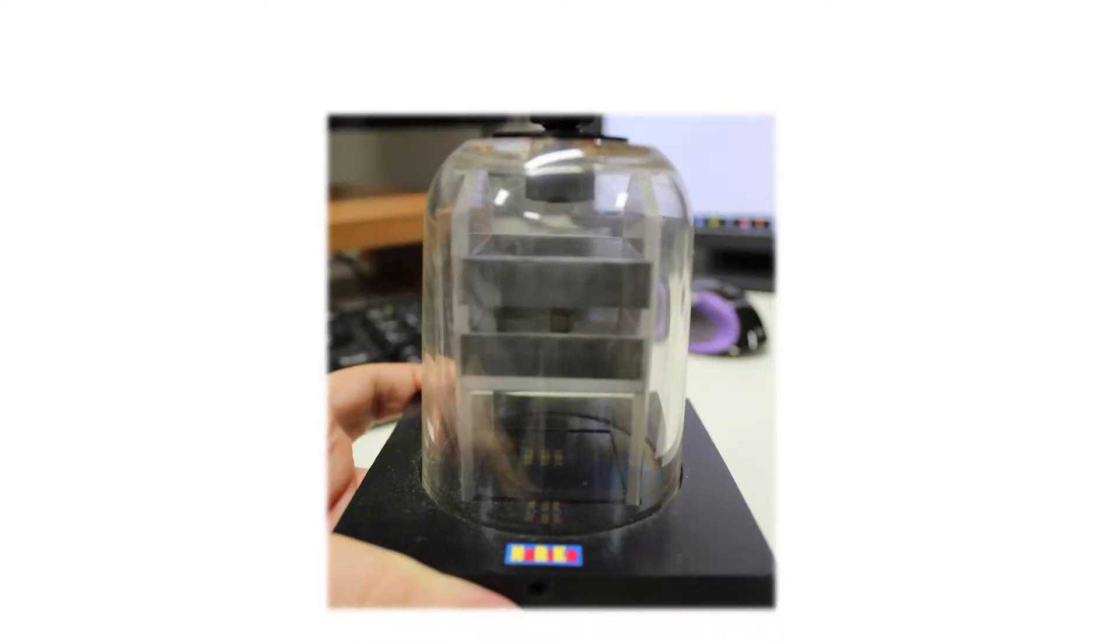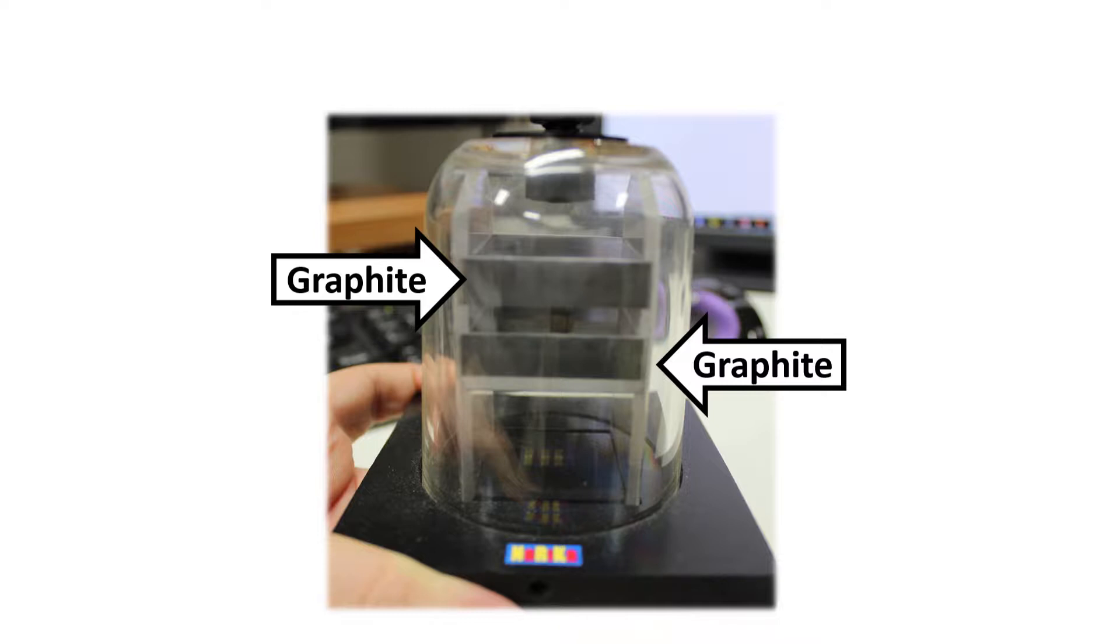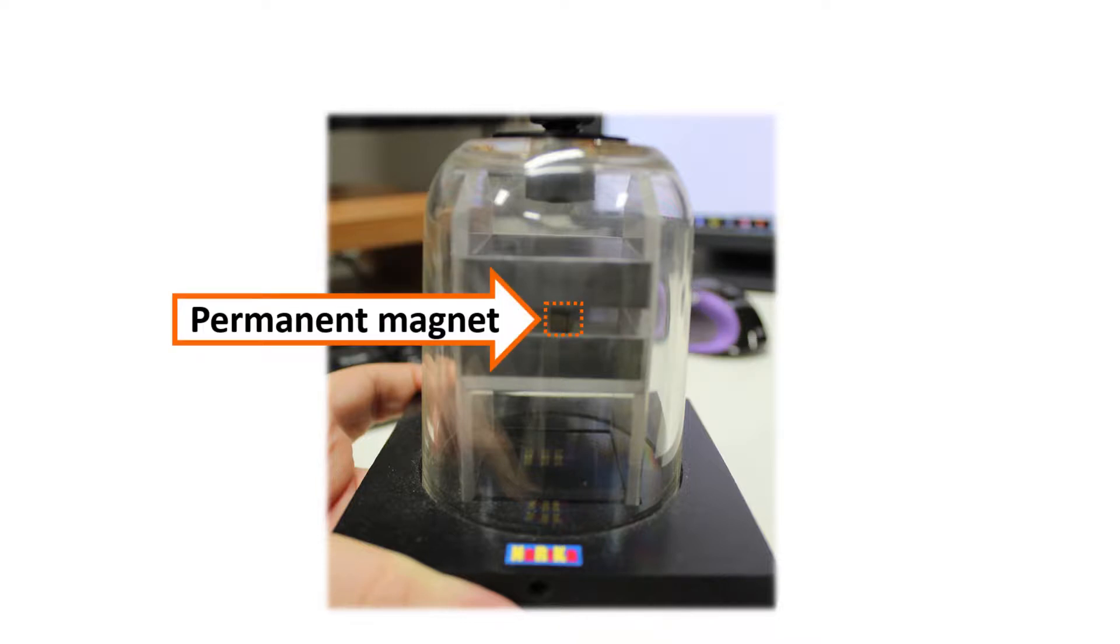Inside this glass there are two layers of graphite, between them there is a small cubic permanent magnet.